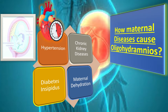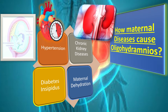What happens in chronic kidney disease? Chronic kidney disease may cause impaired glycocalyx integrity and alteration in the complement and renin-angiotensin-aldosterone system in the kidney, thereby increasing the risk of preeclampsia and high blood pressure, which in turn decreases the liquor volume as we discussed before.